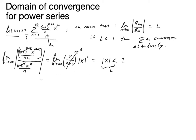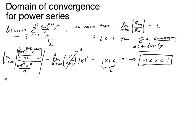So L equals absolute value of x, and we need L less than 1 for absolute convergence. That gives us the interval of convergence: negative 1 less than x less than 1. The question then is what happens at the endpoints — this interval is for absolute convergence, so we still need to check the boundary points.